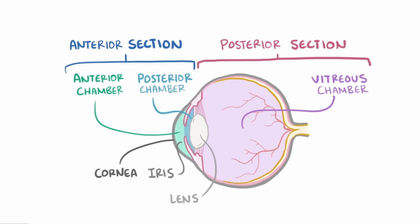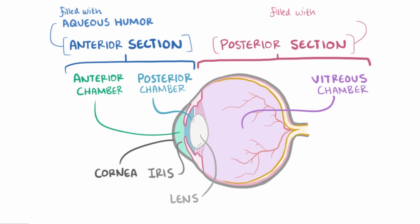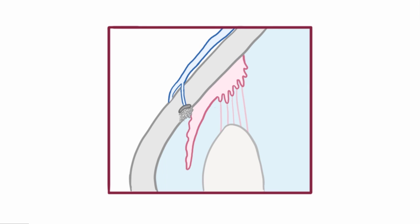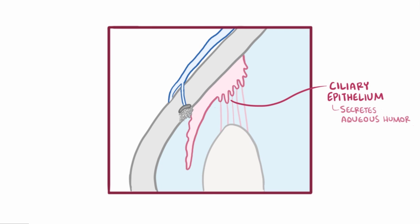Typically, each of these chambers is filled with fluid. The chambers in the anterior section are filled with a liquid called aqueous humor, and the posterior section is filled with vitreous humor. The aqueous humor is a transparent, watery fluid that's secreted by the ciliary epithelium, which in addition to secreting aqueous humor and providing nutrients to the lens and cornea, provides structural support and helps to keep the shape of the eye.